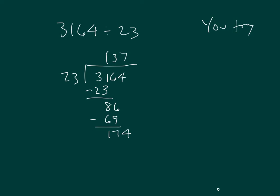Seven times. It's your final one there. Seven times three is twenty-one — one, regroup of two. Seven times two is fourteen, plus two is sixteen. And so our remainder is thirteen. Did you get that as your answer?